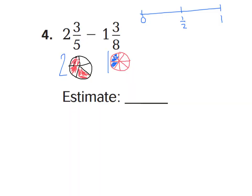When estimating a fraction, you want to estimate it either to zero, one-half, or one-whole. So when you look at the fraction portion of a mixed number, you want to look at the fraction only when you estimate. You're going to ask yourself: is this close to zero, is it closer to one-half, or is this fraction closer to one-whole?